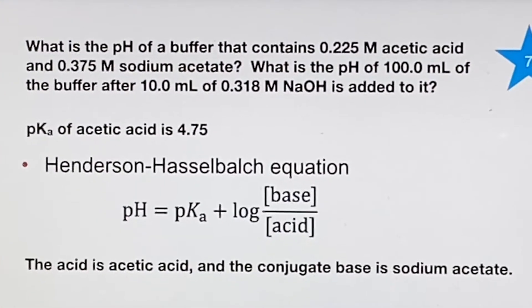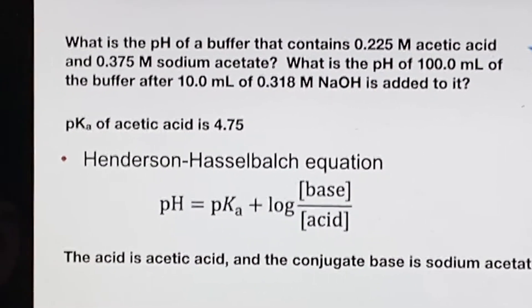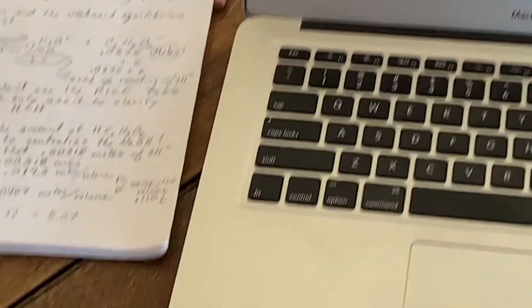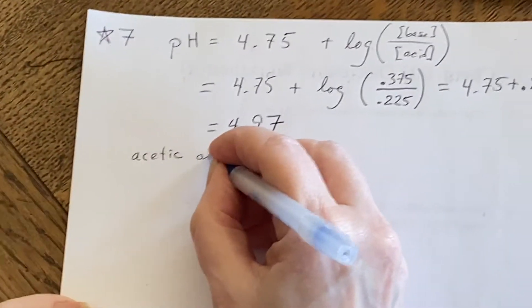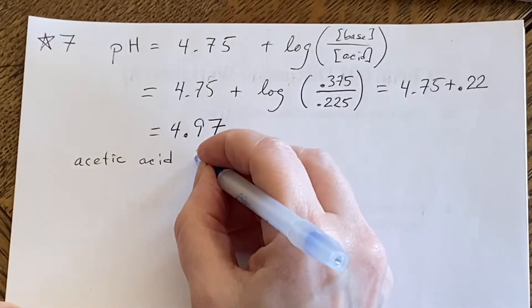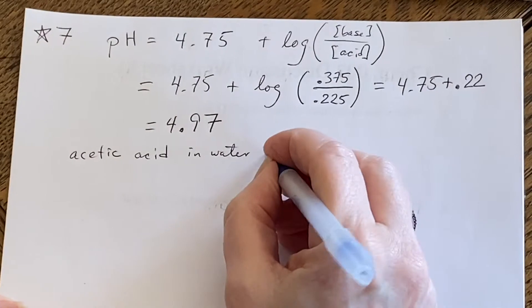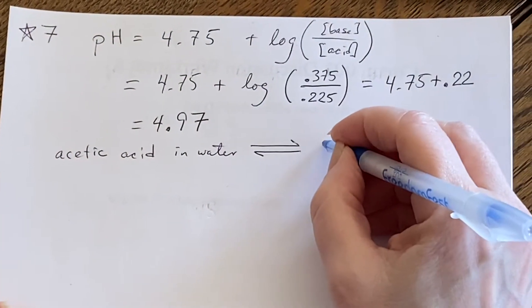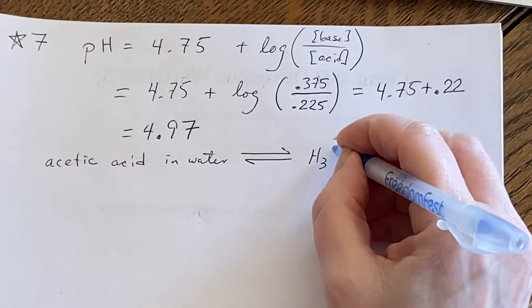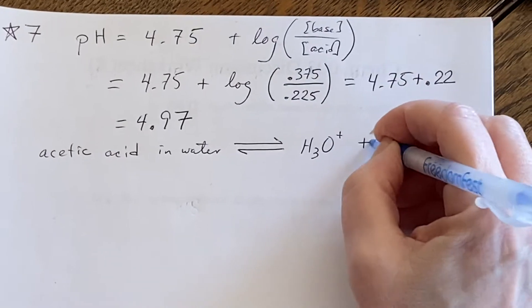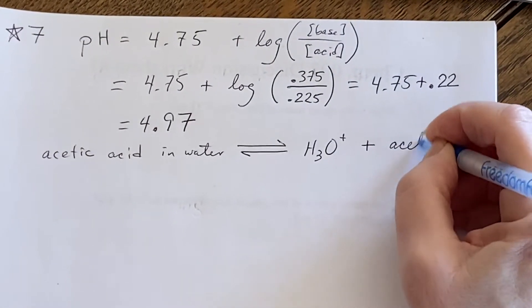So now we have to stop and think, what is it we were doing? We had acetic acid in water and it was in an equilibrium and acetate ion.